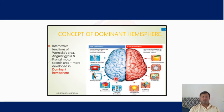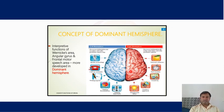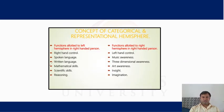The left portion and right portion of the cerebral hemisphere are shown. It is generally known that the left hemisphere commands the right side — the left cerebral hemisphere commands the right hand and right leg, while the right cerebral hemisphere controls the left hand and left leg. This is called dominant hemisphere. The concept of categorical representation means the functions allotted to the left hemisphere in a right-handed person.